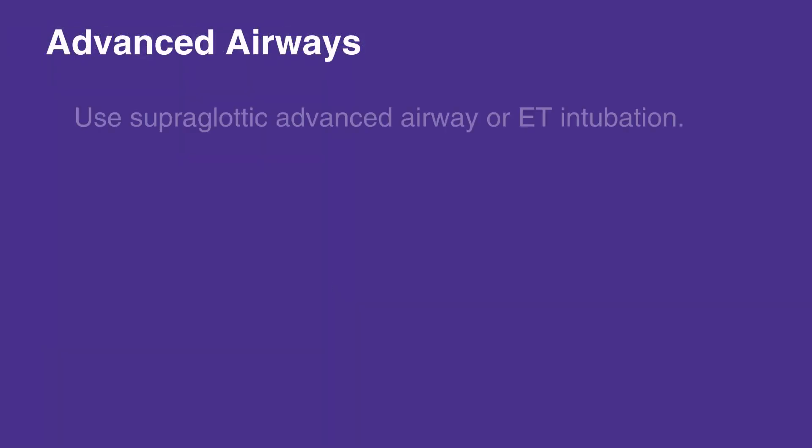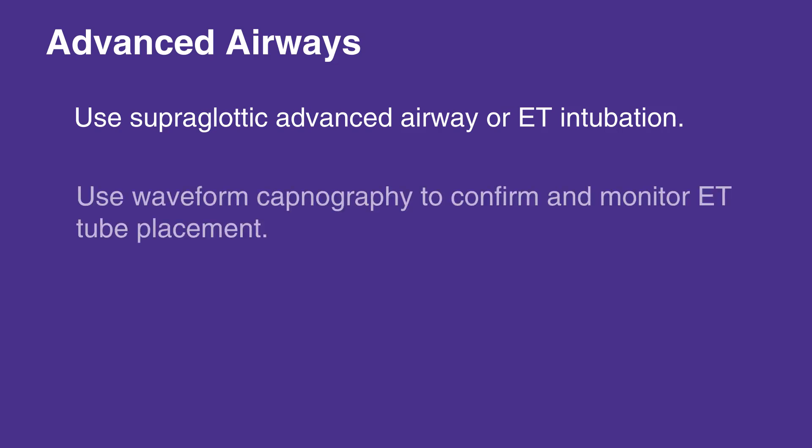When working with advanced airways, use supraglottic advanced airway or ET intubation. Use waveform capnography to confirm and monitor ET tube placement. Once the advanced airway is in place, give 1 breath every 2 to 3 seconds, or 20 to 30 breaths per minute.